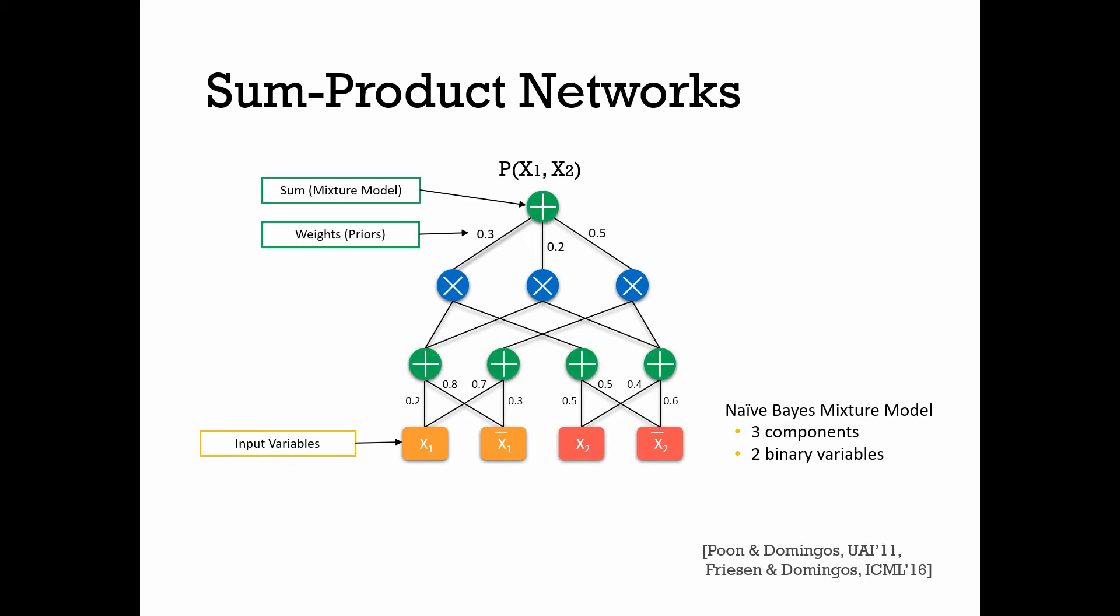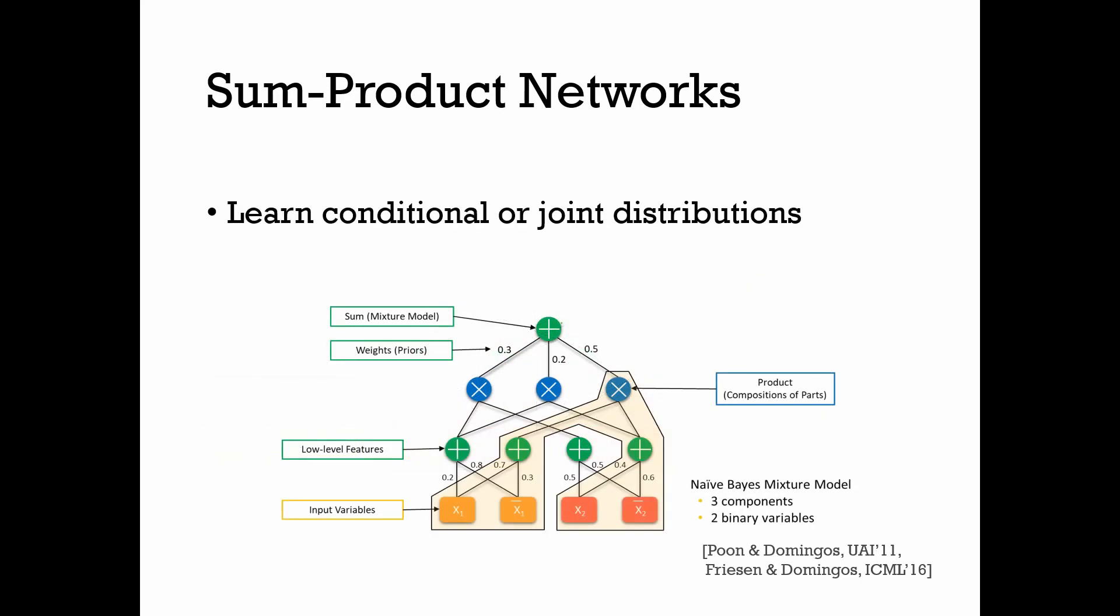The sum nodes can be seen as representing mixture models, with weights of each sum representing priors. The latent variables of such mixtures can be made explicit and their values inferred. Products can be considered compositions of parts. The bottom layers effectively define low-level features as in traditional deep architectures. Each sub-SPN is itself a distribution. SPNs are capable of learning conditional or joint distributions, with partition functions that are guaranteed to be tractable, permitting exact inference.